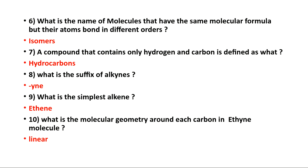Question nine: what is the simplest alkyne? The simplest compound with a double bond has two carbon atoms joined together with a double bond — that is ethene. Question ten: what is the molecular geometry around each carbon in the ethyne molecule?